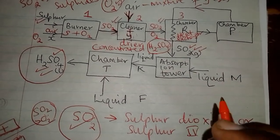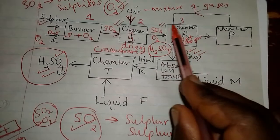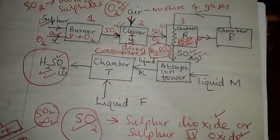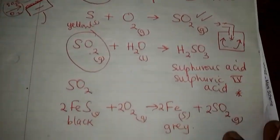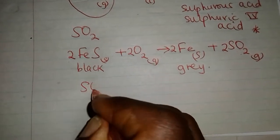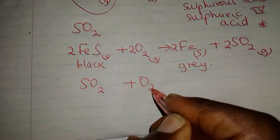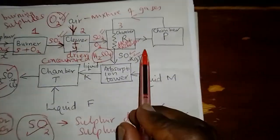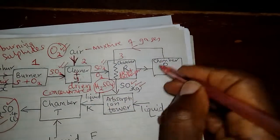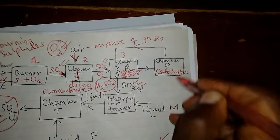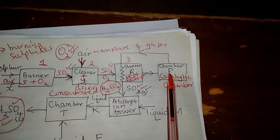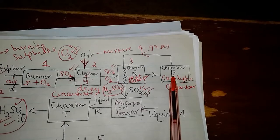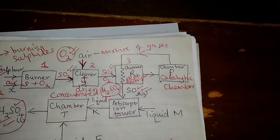The SO2 and oxygen have attained a temperature to facilitate their reaction, so they get introduced into the catalytic chamber. In the catalytic chamber, we use a catalyst that can work well. There are two possible catalysts. We are going to call the first one vanadium pentoxide — V2O5. If you do not have vanadium pentoxide, you can also use platinum, which is called the platinum-rhodium catalyst.